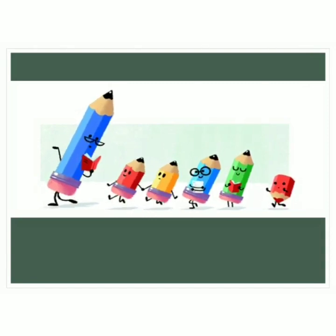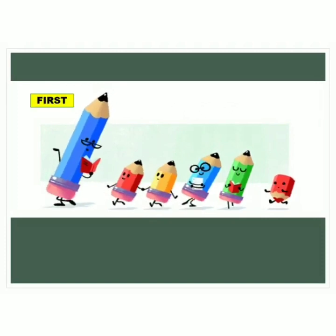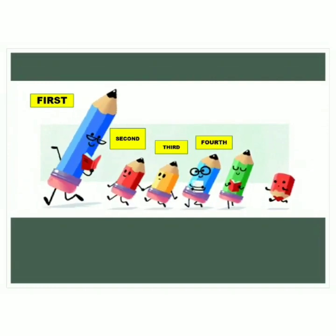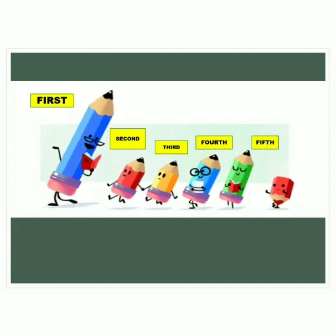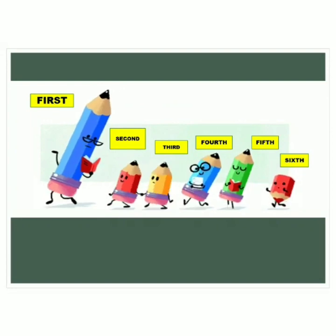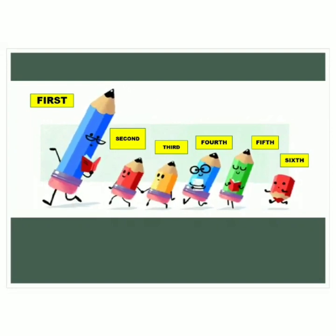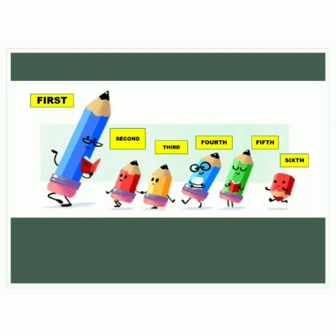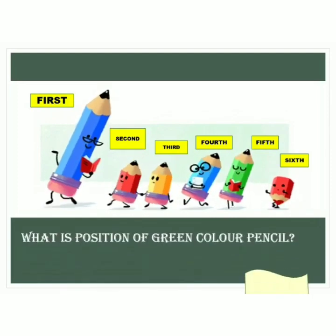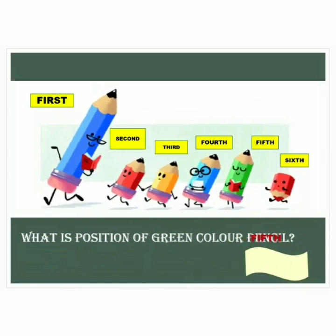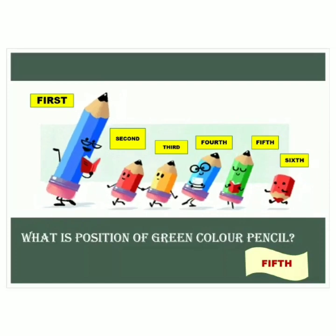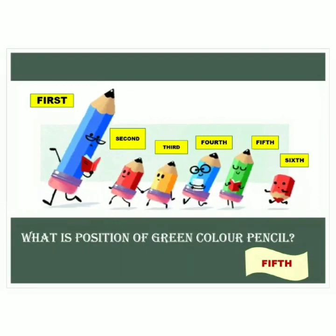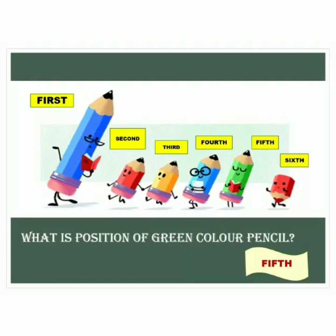The tallest pencil leading the line is at the 1st position, next is at the 2nd, then 3rd position, next is on the 4th, then on the 5th position, and the last one is at the 6th position. In this way, we use ordinal numbers to see the position of each one in a line. Now, children, can you tell me what is the position of the green color pencil? Yes, it is at the 5th position. So, it is clear: we use cardinal numbers to find the quantity of things and ordinal numbers to tell the order.